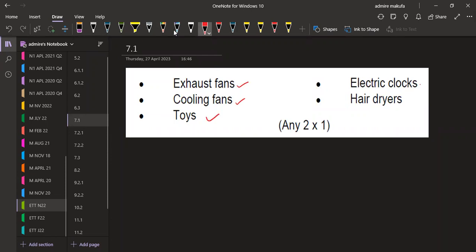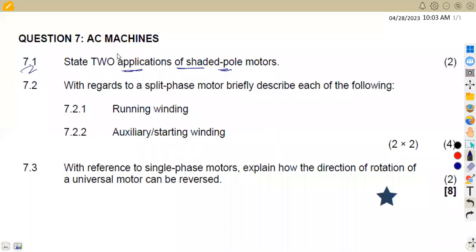...electrical clocks, hair dryers. These are applications where we can use shaded-pole motors. Any two from these answers are acceptable for the question.